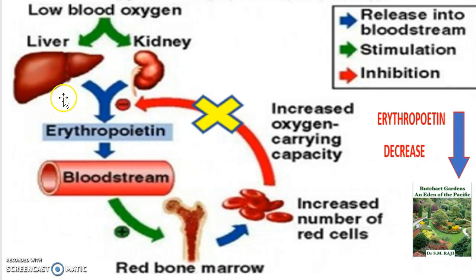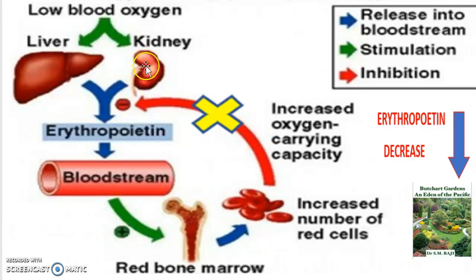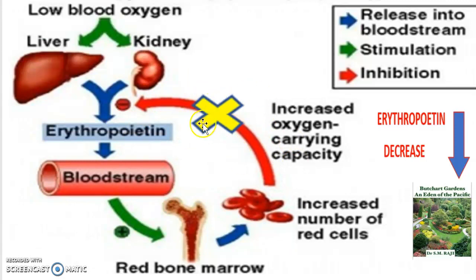However, if you have polycythemia, the mutation causes a decrease in erythropoietin production. The kidney and liver still sense that there are too many blood cells, but they cannot produce enough erythropoietin, so the bone marrow never gets the message and keeps producing too many blood cells. This means the negative feedback loop is never met.